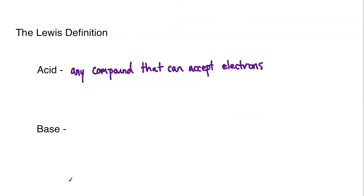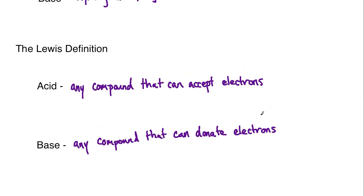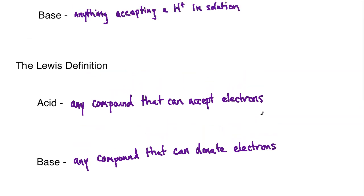So that's the definition for an acid by Lewis, and then it's going to be similar as far as a flip here, but it's still going to be focused on electrons. A base will be any compound that can donate electrons. And again, that becomes very important when you're talking about organic chemistry, especially for those of you that may take organic chemistry or are currently in it, and you are doing mechanisms where you have to move electrons around and show the flow of electrons in a reaction.